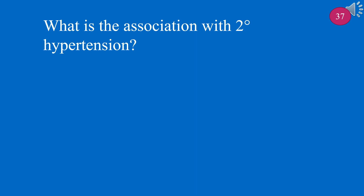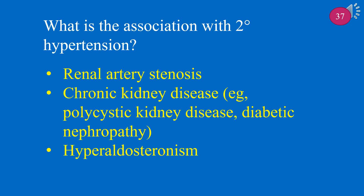What is the association with secondary hypertension? Secondary hypertension is associated with renal artery stenosis, chronic kidney disease such as polycystic kidney disease, diabetic nephropathy, and hyperaldosteronism.